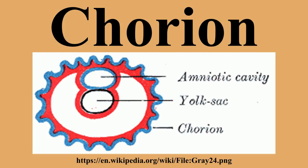The chorion undergoes rapid proliferation and forms numerous processes, the chorionic villi, which invade and destroy the uterine decidua, while simultaneously absorbing nutritive materials from it for the growth of the embryo. The chorionic villi are at first small and non-vascular and consist of the trophoblast only, but they increase in size and ramify, whereas the mesoderm, carrying branches of the umbilical vessels, grows into them and they are vascularized. Blood is carried to the villi by the paired umbilical arteries, which branch into chorionic arteries and enter the chorionic villi as cotyledon arteries.